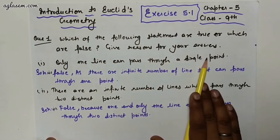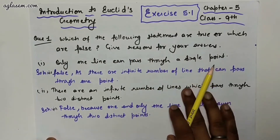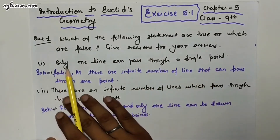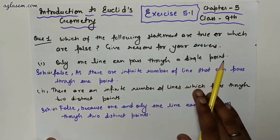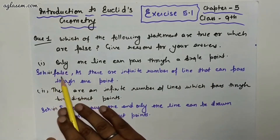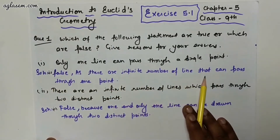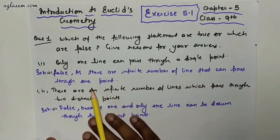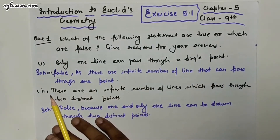The first statement is: only one line can pass through a single point. This statement is false, as there are an infinite number of lines that can pass through a single point.